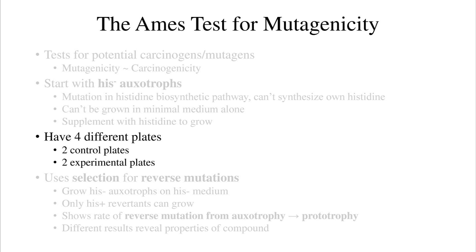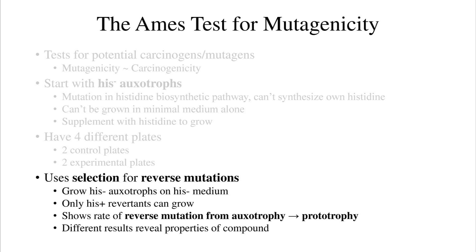The setup of the Ames test has four different plates — two control plates and two experimental plates. It's important to realize that the Ames test uses a selection to select for reverse mutants. The hist-minus auxotrophs are plated on hist-minus medium, so the only bacteria that can grow are the hist-plus reverse mutants, or revertants. This is a selection for the hist-plus revertants — the bacteria that started as hist-minus auxotrophs and became prototrophs via reverse mutation.